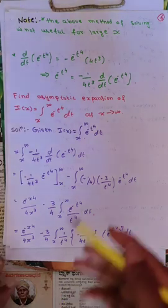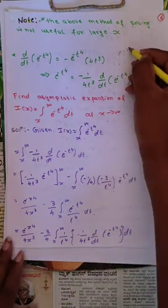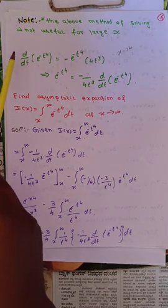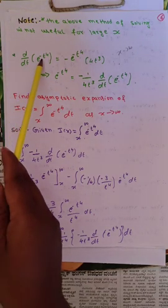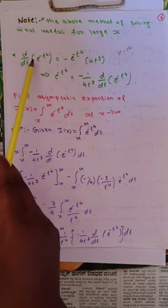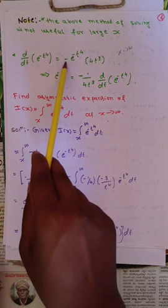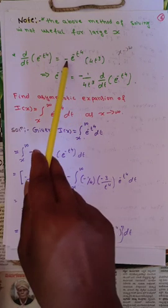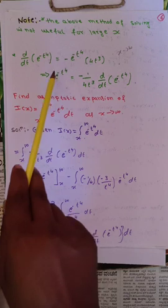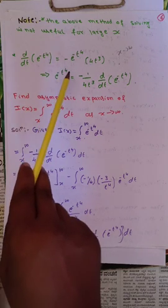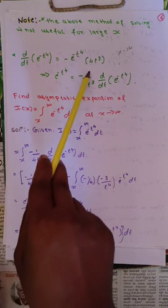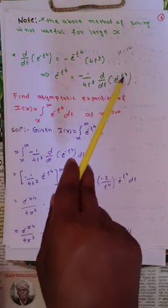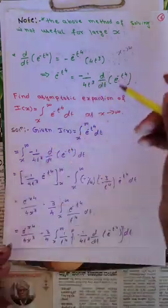Second note: d/dt of e^(-t^4). Differentiating this, we get minus e^(-t^4) into 4t³. Then, equating, e^(-t^4) equals minus 1 divided by 4t³ times d/dt of e^(-t^4). Remember this note.